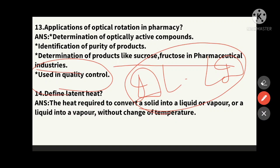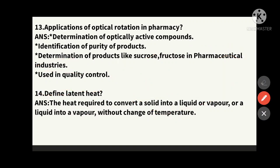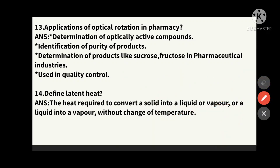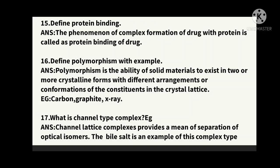The fourteenth question: define latent heat. Latent heat is the heat required to convert a solid into a liquid or vapor, or a liquid into a vapor, without a change in temperature. For example, at 100°C the material converts from solid to liquid or liquid to vapor at that same temperature without a temperature change — this is latent heat.